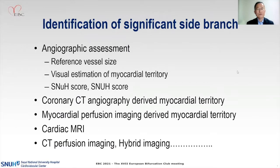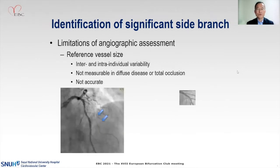Today, I'd like to review the methods developed to identify significant side branches, from angiographic assessment to the recently developed tools. We most commonly use vessel size to represent the significance of a branch. However, we know that it has lots of limitations, such as intra- and inter-individual variability. For this kind of significant disease which needs intervention, it generally has a diffuse or obstructive lesion, so we cannot accurately measure the diameter.